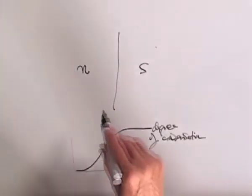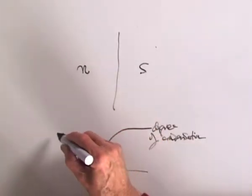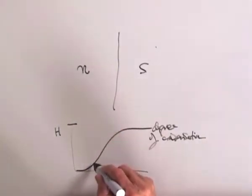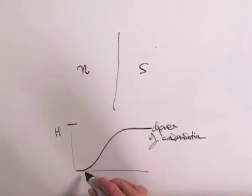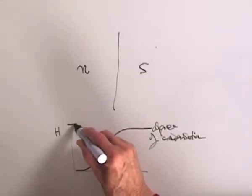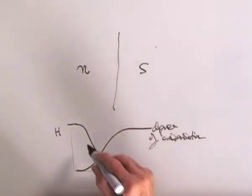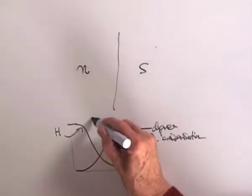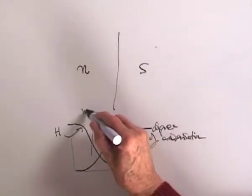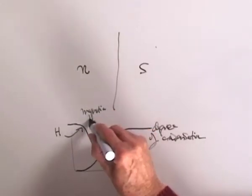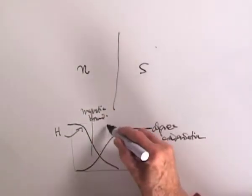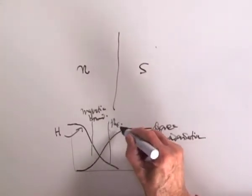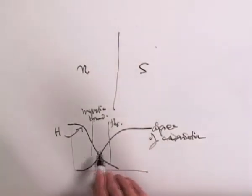The magnetic field starts to decrease as soon as there's any superconductivity present. So the magnetic field behaves like that, and now you have a magnetic boundary there, and the physical boundary between normal and superconductor there, and they're separated.